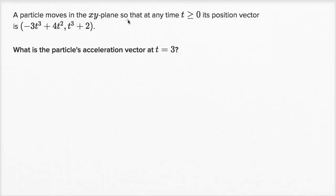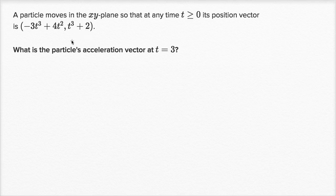A particle moves in the xy plane so that at any time t greater than or equal to zero, its position vector is given with x and y components that are both functions of time. What is the particle's acceleration vector at time t equals three?